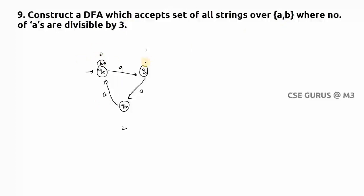What about number of b's? Any number it can have. That's why self loop everywhere. So the final state is q0 itself. And now you can check out: is it following the DFA rules? Yes, it is following.